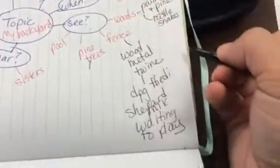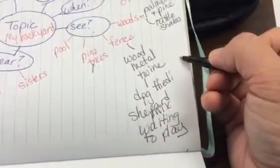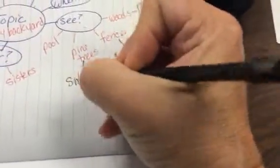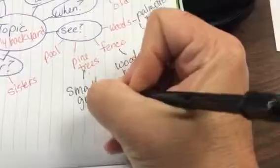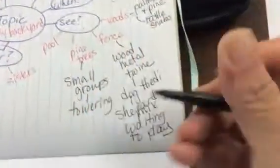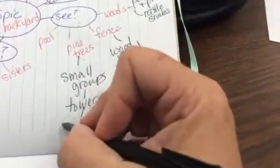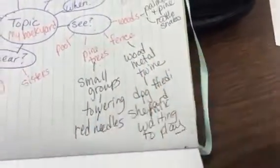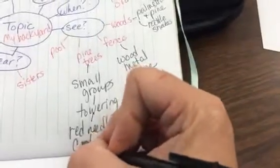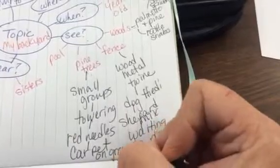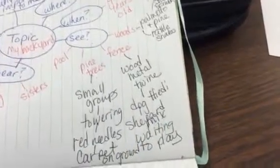Pine trees. We had several of them in our backyard, small groups of them, and they were towering. You couldn't really climb them because they were really up high. The red needles would fall on the ground and it would make like a cushion on the ground, like a carpet, which was really pretty and it was really soft.